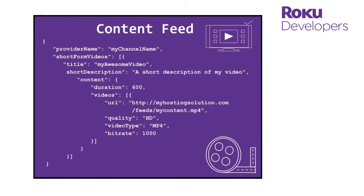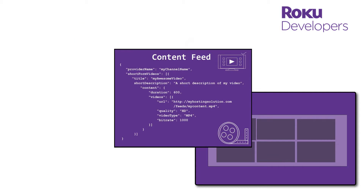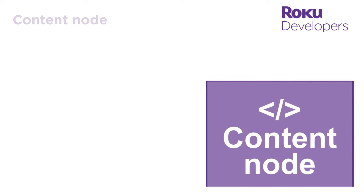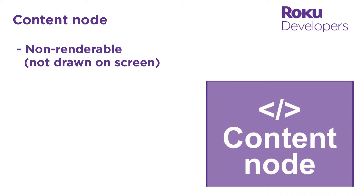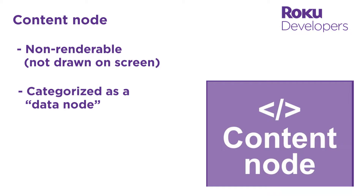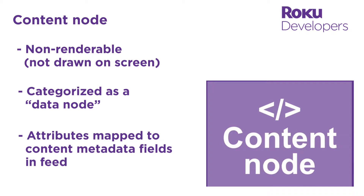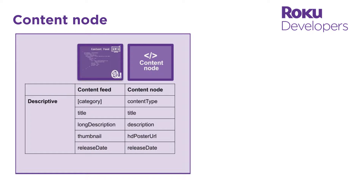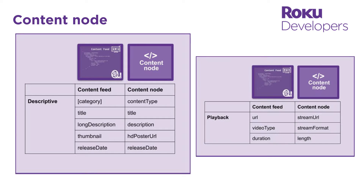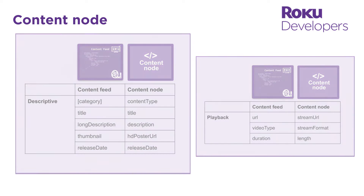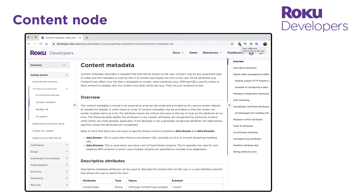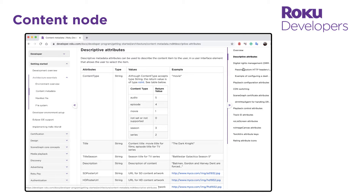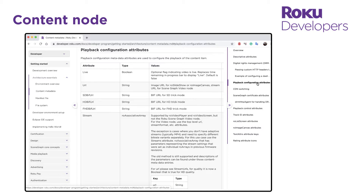The content metadata in your feed is linked to the components in your channel UI via the content node. The content node is a special non-renderable node that is categorized as a data node. It has attributes that are designed to be mapped to the metadata in your content feed. For example, the content node has descriptive attributes such as title, description, and poster URL that are used to display content, and playback attributes such as the URL and stream format that are used to launch content. Check out the content metadata documentation for all the attributes that the content node supports. This will help you determine which metadata attributes to display in your channel.